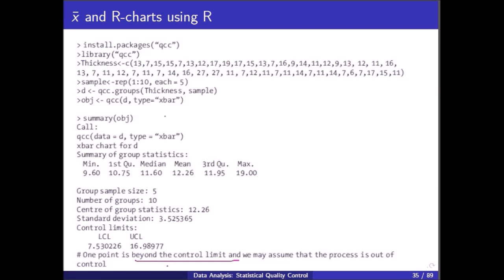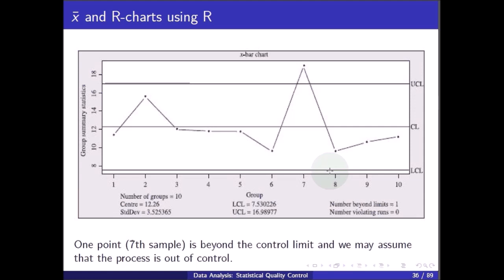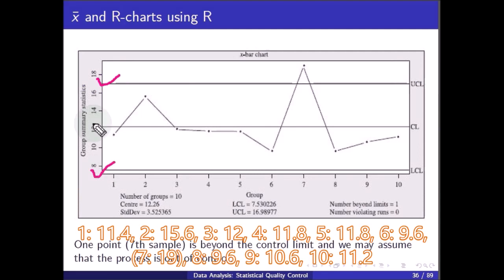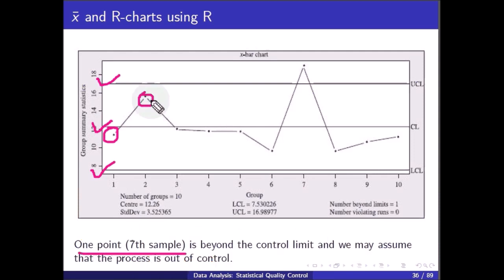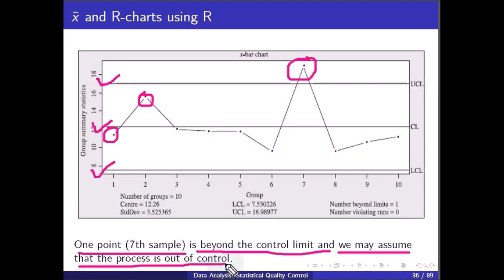When we plot the data, we can see the upper limit, lower limit, and center line. The seventh sample exceeds the upper control limit, confirming that the process is out of control.